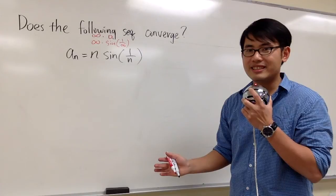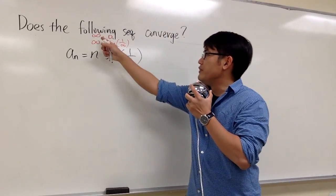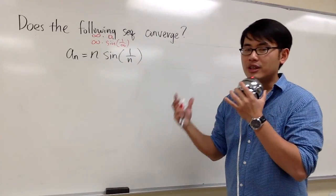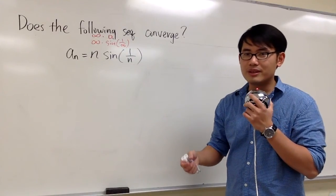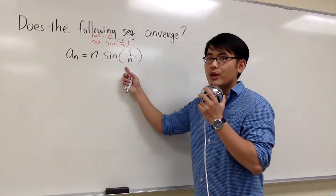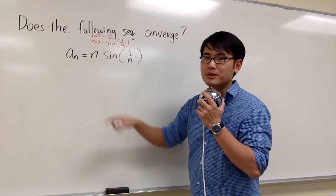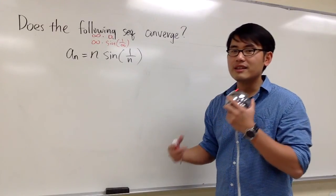We have to do more work with it. Usually if this happens, we're going to change the form to either 0 over 0 or infinity over infinity so we can use L'Hôpital's rule. To do that with a sequence, we will have to first write this in terms of x so we can talk about functions and the derivative.